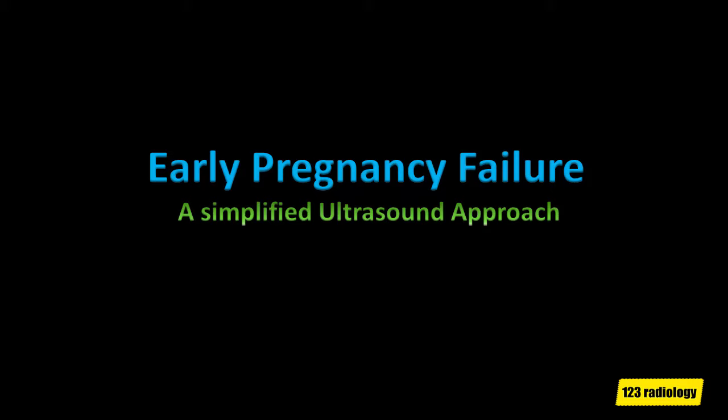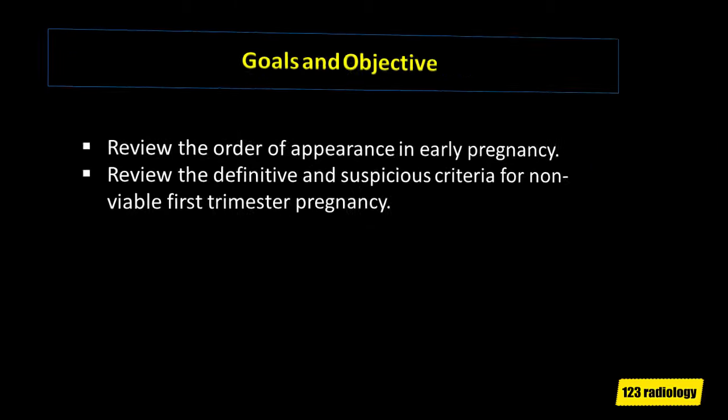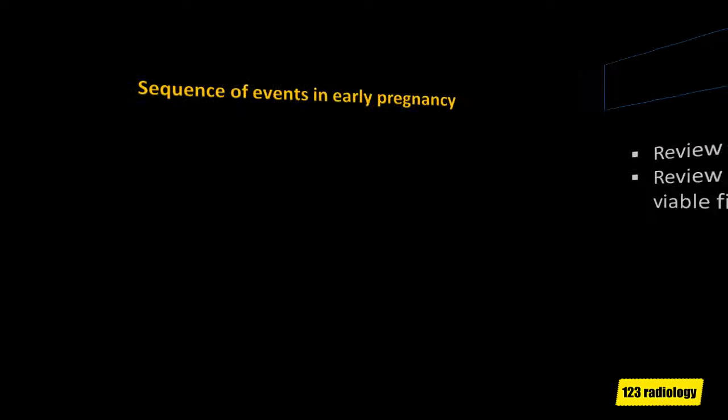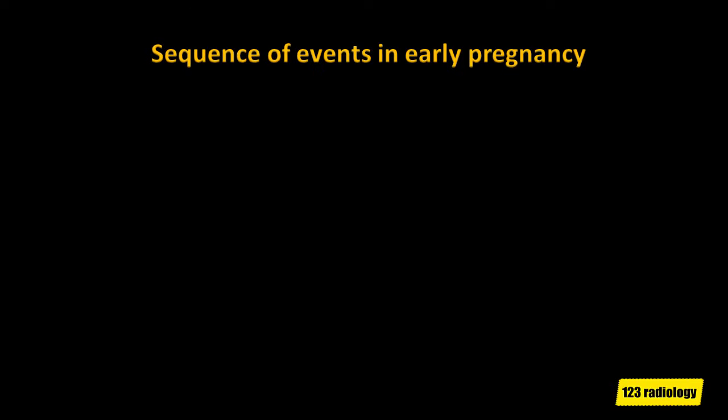Welcome to this lecture about Early Pregnancy Failure: a Simplified Ultrasound Approach. The goals and objectives from this talk are to review the order of appearance in early pregnancy, and to review the definitive and suspicious criteria for non-viable first trimester pregnancy. Before we go deep into the criteria for pregnancy failure, we will do a quick review of normal early pregnancy.